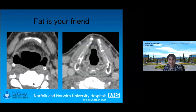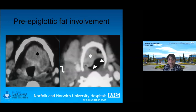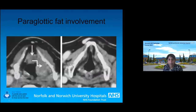Fat is your friend. On axial T1 images, bone marrow is fat, and there is also preepiglottic fat and paraglottic fat. When looking through a laryngeal scan, you want to check if these fat spaces are involved because that will upstage the patient — and that's not something you'll be able to see with a nasal endoscope. This is a tumor involving the preepiglottic fat. This is normal paraglottic fat, and this is tumor extending into the paraglottic fat and actually eroding the thyroid cartilage.